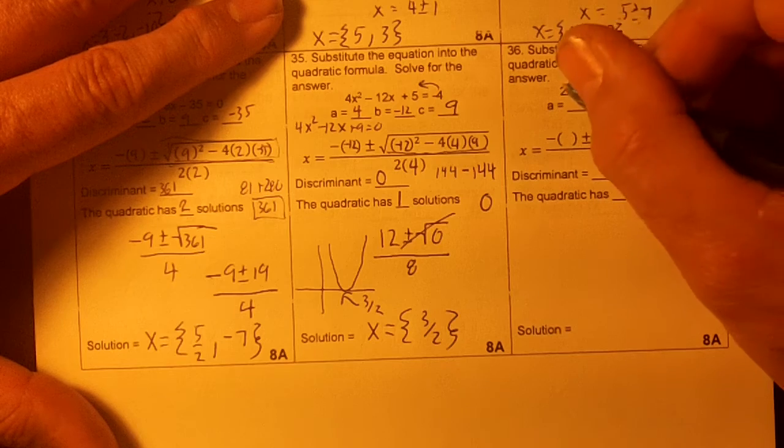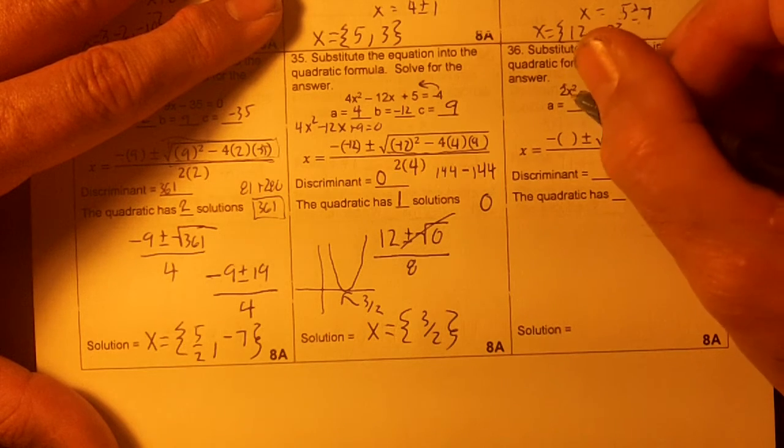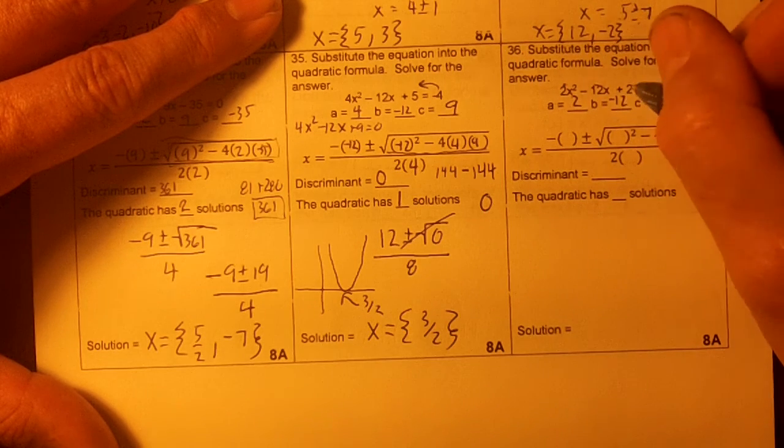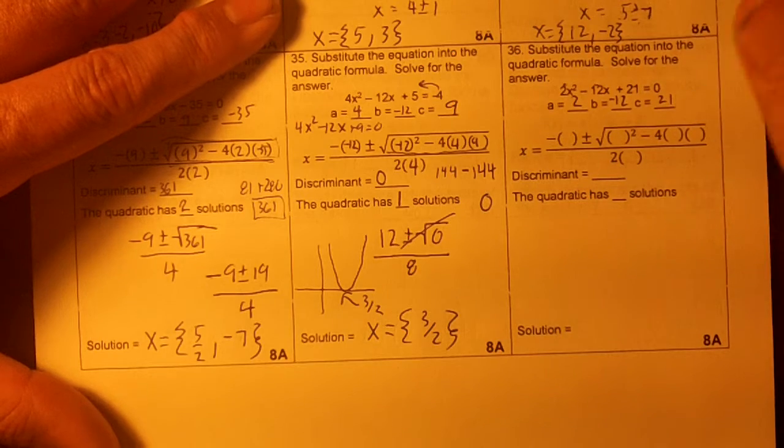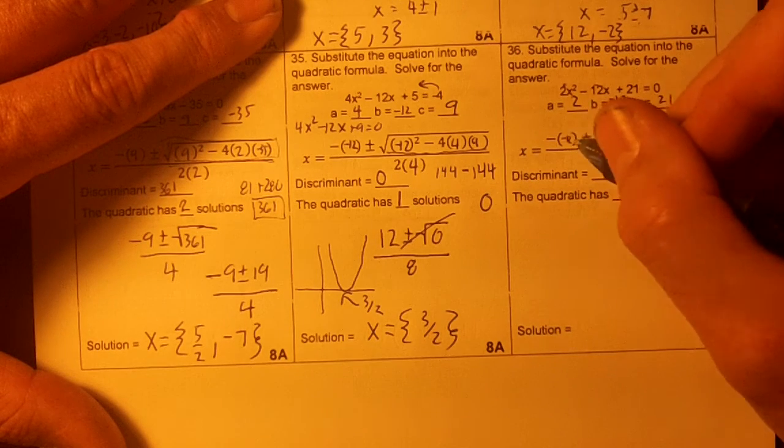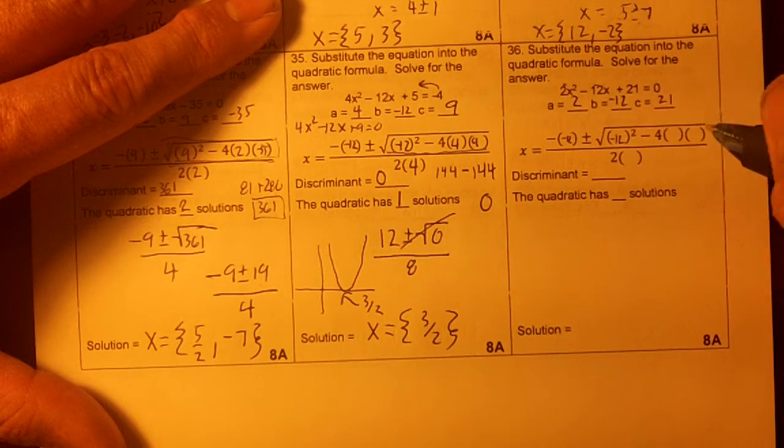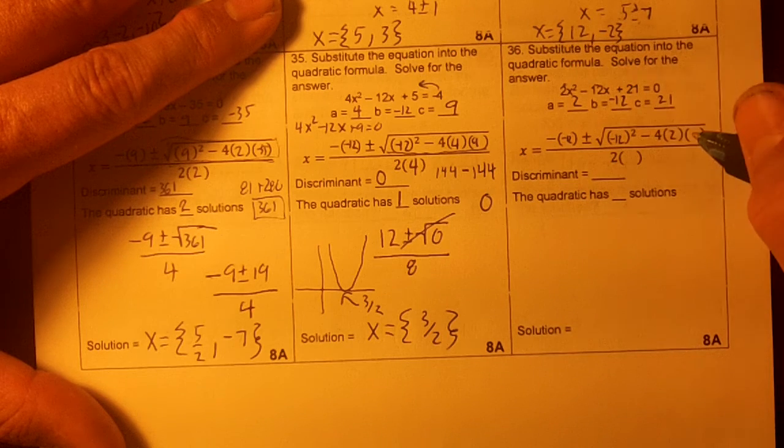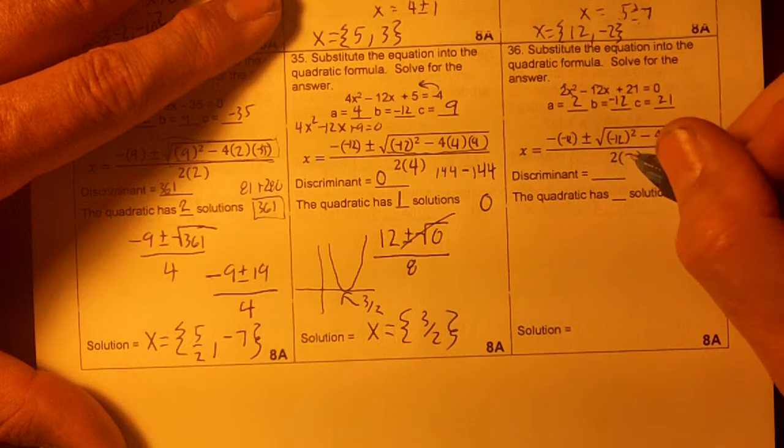Okay, right here we have our A, our B, and our C. So our A is 2, our B is negative 12, and our C is 21. So the negative 12 goes here. Our negative 12 goes again. B squared minus 4AC. And this is going to be 2.